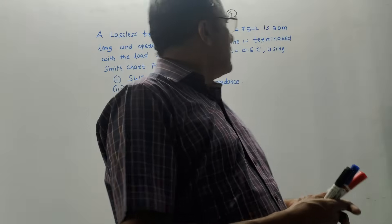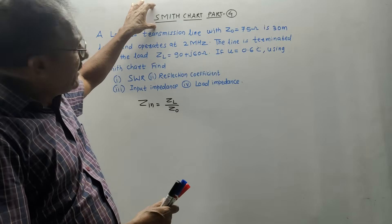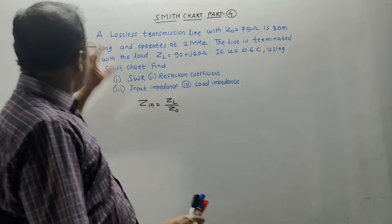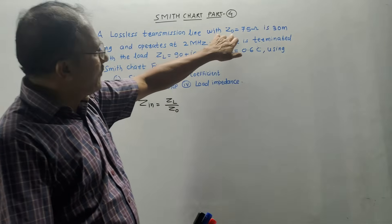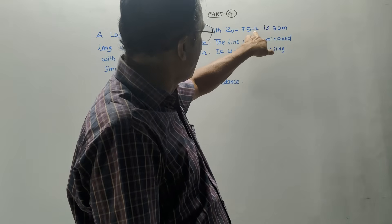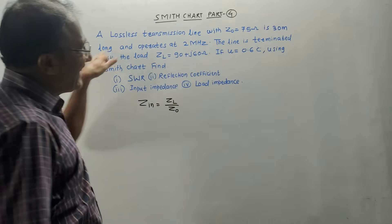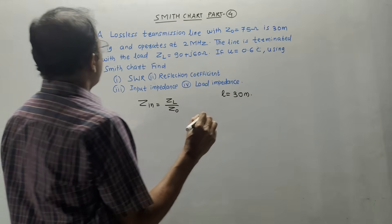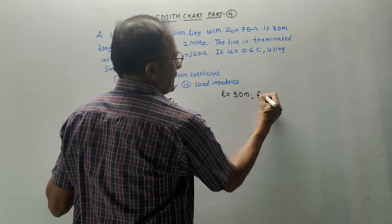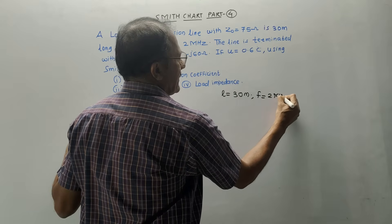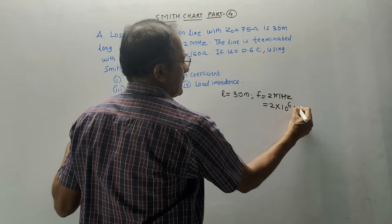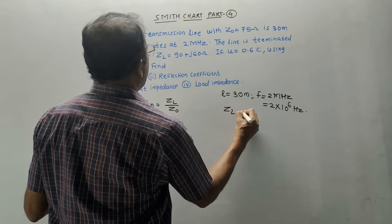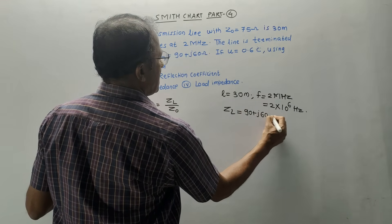Hello and welcome back to this channel. Dear students, we will be studying Smith chart part 4. If you haven't yet watched earlier videos, do watch those first. The question is: a lossless transmission line with Z0, the characteristic impedance, which is 75 ohms, is 30 meters long — denoted by L — and operates at 2 megahertz. The line is terminated with the load ZL, given as 90 plus j60 ohms.